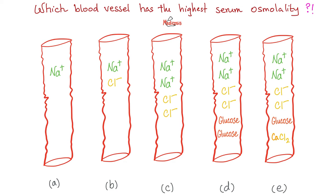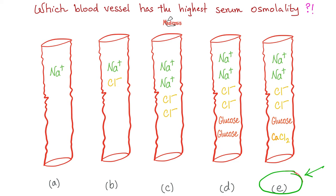Which one of these vessels has the highest serum osmolality? Please pause. The answer is E. We care about the number of particles — options D and E have the highest number of particles. The only difference is glucose versus NaCl. Glucose gives one osmol, but NaCl gives three osmoles — one for Na and two for Cl. Since osmolality cares about number, E has the highest serum osmolality.